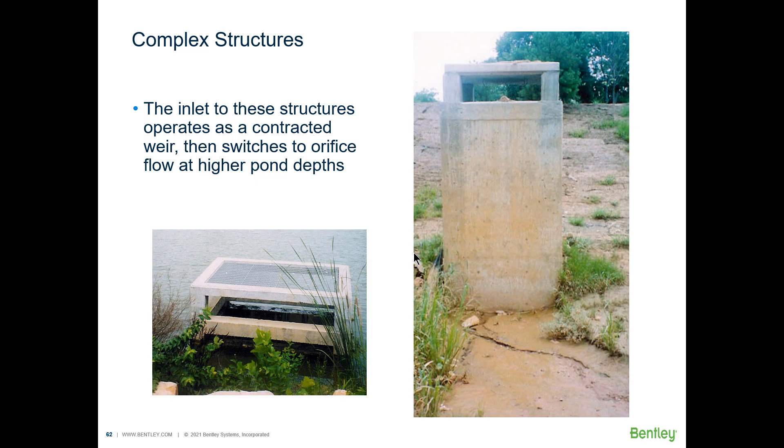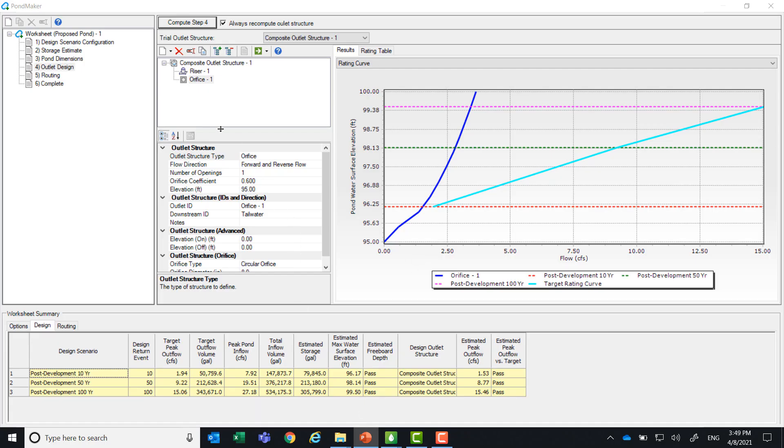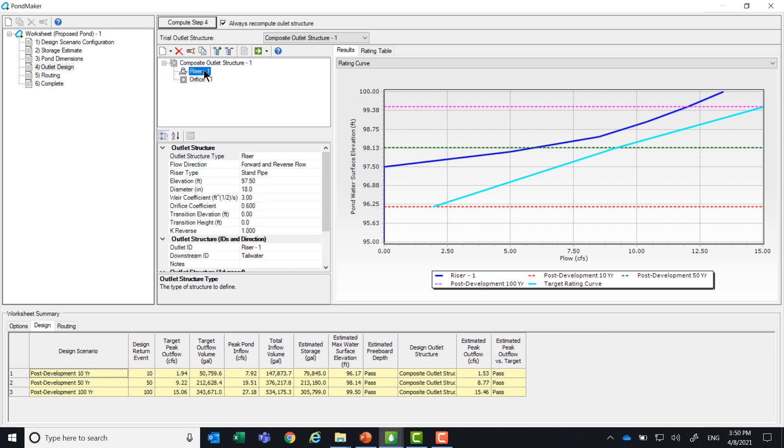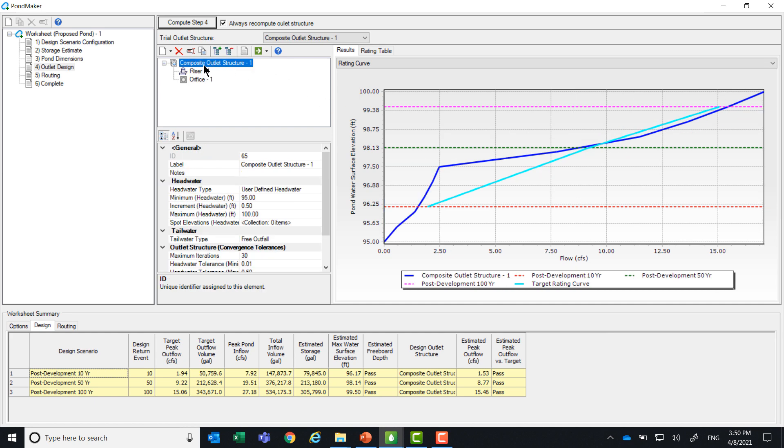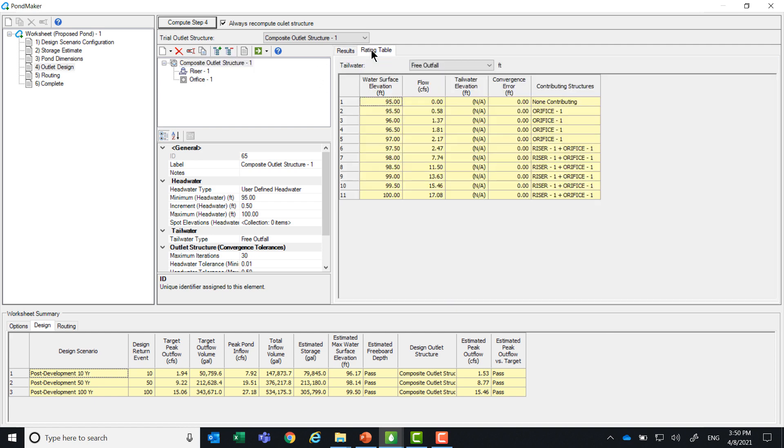Let me show you how this looks like in the software. Here we have our pond maker worksheet and you can see that for the outlet structure I see the rating curve for the orifice that I've entered. I can also see the rating curve for the riser and I can look at the composite outlet structure which combines both the riser and orifice and I can also look at their rating table so it can tell me at which water surface elevation the structures are contributing.